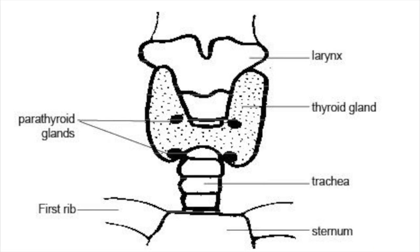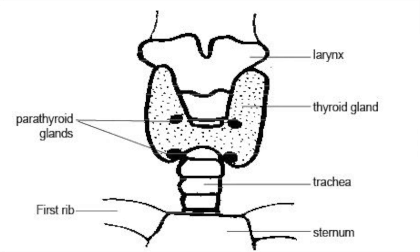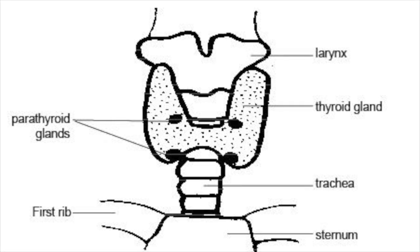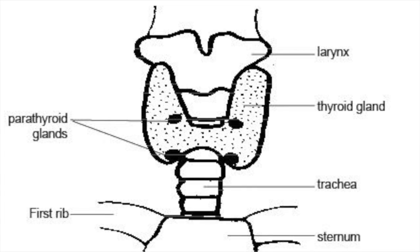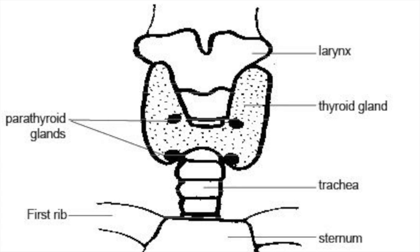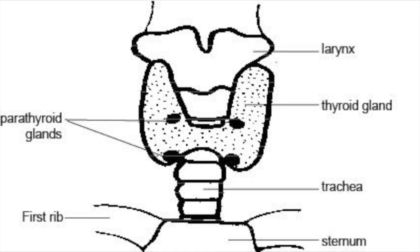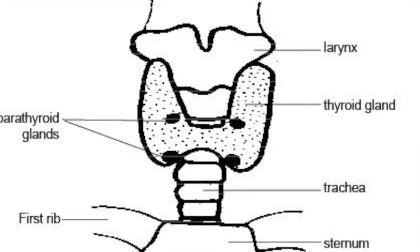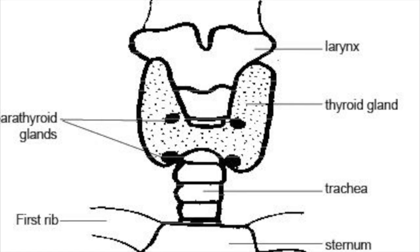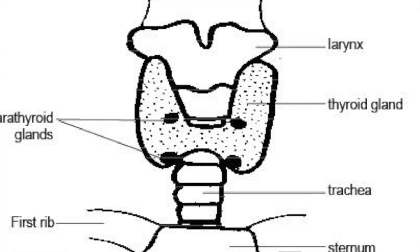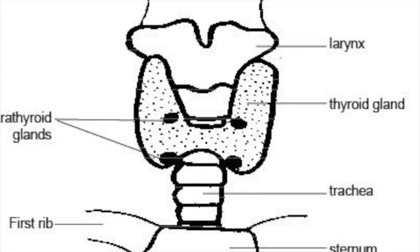The thyroid gland, located near the trachea, functions in response to TSH and releases the hormones thyroxine (T4), triiodothyronine (T3), and calcitonin. T4 and T3 regulate metabolic rates in adults and growth and development in young. Calcitonin regulates calcium concentrations in the blood and can lower calcium levels if they become too high. The parathyroid, located near the thyroid gland, controls levels of calcium by increasing it if blood level is too low, and that is regulated by chief cells.